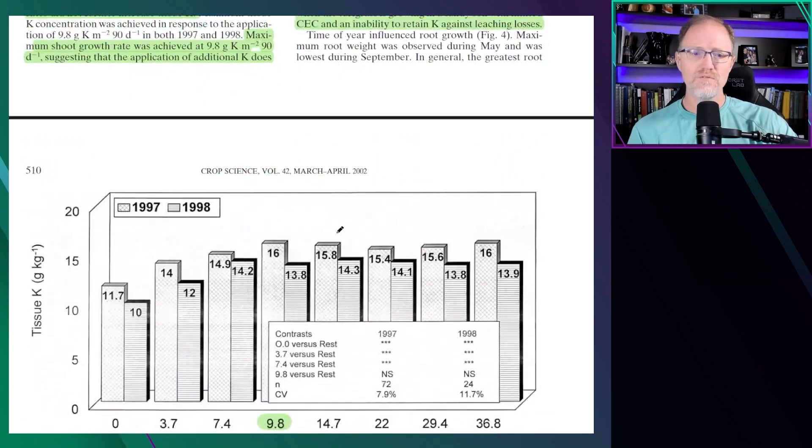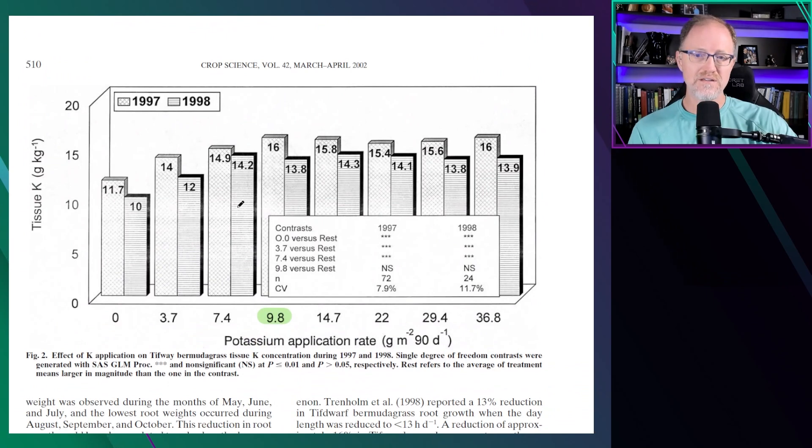When we go to the tissue potassium, we see that there were some differences until they reached the two pounds of potassium per year mark, which is a little bit less than a two to one N:K. And so when you apply nitrogen or potassium at around a two to one N:K, sometimes a little less, sometimes a little bit more occasionally, you're going to max out the tissue potassium and there was no longer any benefit to applying more potassium in the tissue.